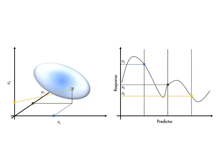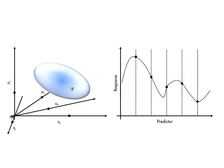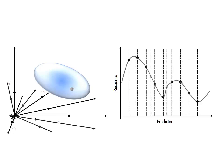If we let n get larger and larger, we get better and better resolution of the function. Theoretically, a function is therefore fully represented by a point in an infinite-dimensional space, although a large value of n is sufficient for practical purposes.